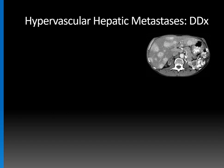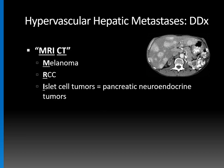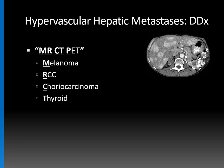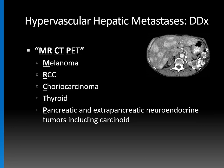For hypervascular hepatic metastases, a handy mnemonic is MRICT: Melanoma, Renal cell carcinoma, Islet cell tumors (pancreatic neuroendocrine tumors), Carcinoid and Choriocarcinoma, and Thyroid. If you prefer nuclear medicine, use MRCT PET: Melanoma, Renal cell carcinoma, Choriocarcinoma, Thyroid, and Pancreatic/extrapancreatic neuroendocrine tumors including carcinoid. The most common hypervascular hepatic metastases are melanoma, renal cell carcinoma, and carcinoid. For hypovascular liver metastases, there's no mnemonic, but it's typically GI tract, pancreas, and sometimes lung.